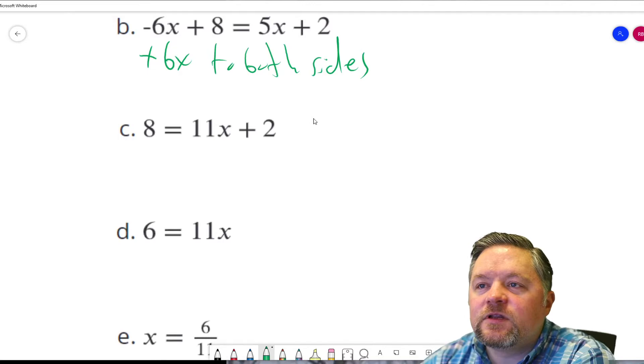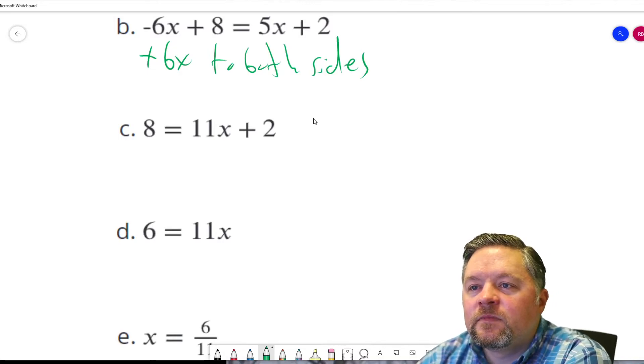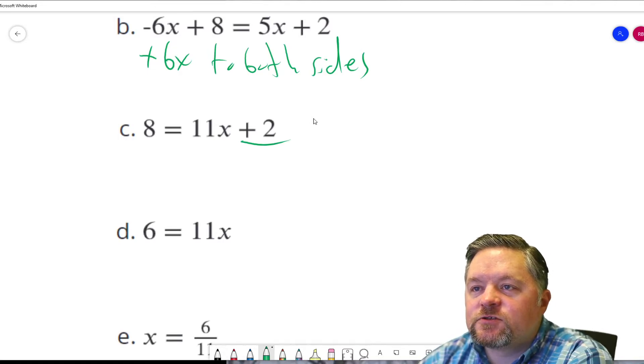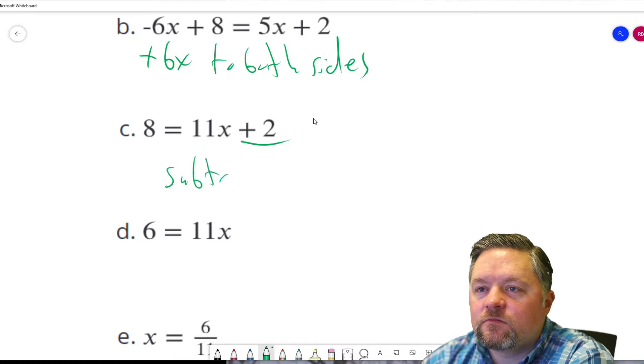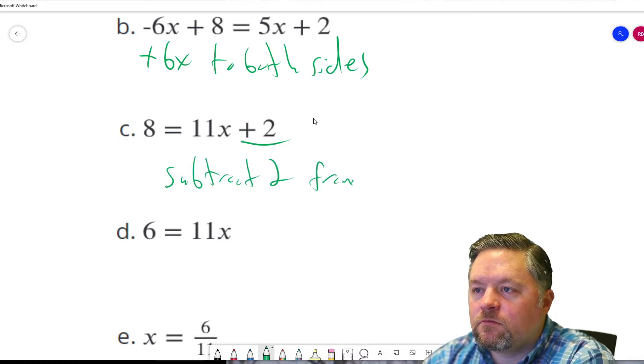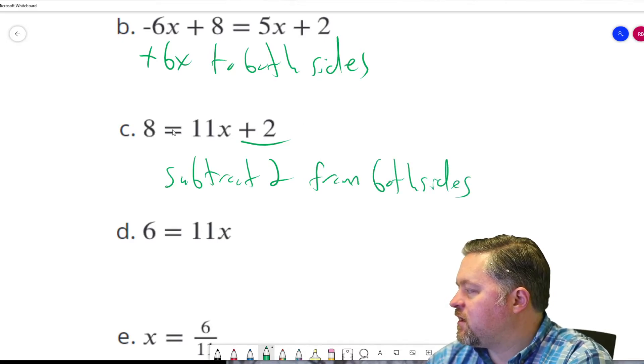Now, what did we do? It looks like what changed was this 2. So how do we get rid of adding 2? We subtract 2 from both sides.